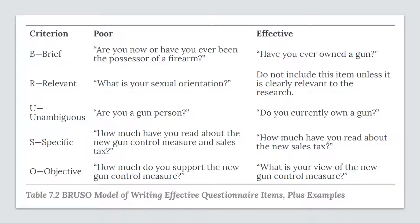Effective questionnaire items are also unambiguous—they can be interpreted in only one way. Part of the problem with the alcohol item is that respondents might have different ideas about what constitutes an alcoholic drink or a typical day. Items should also be specific, so it's clear to respondents what the response should be about. A common problem is double-barreled items, which ask about two conceptually separate issues but allow only one response—for example, 'Please rate the extent to which you have been feeling anxious and depressed.' This item should be split into two separate items, one about anxiety and one about depression.